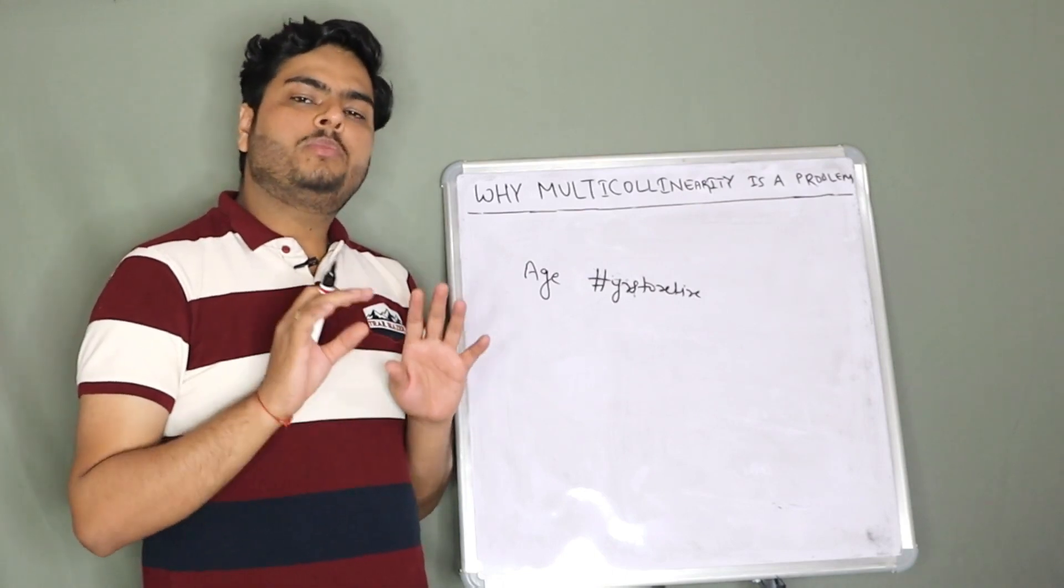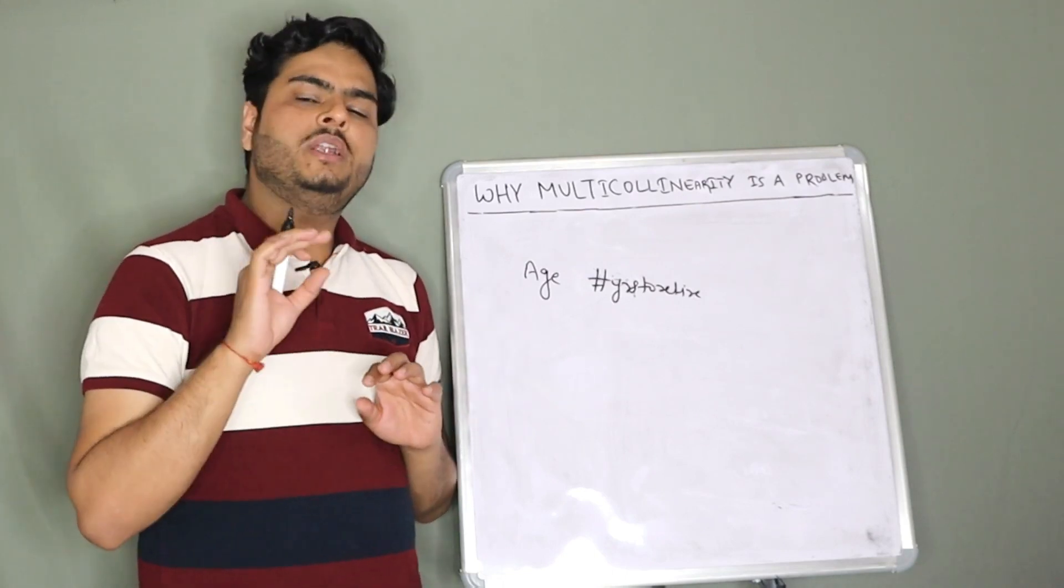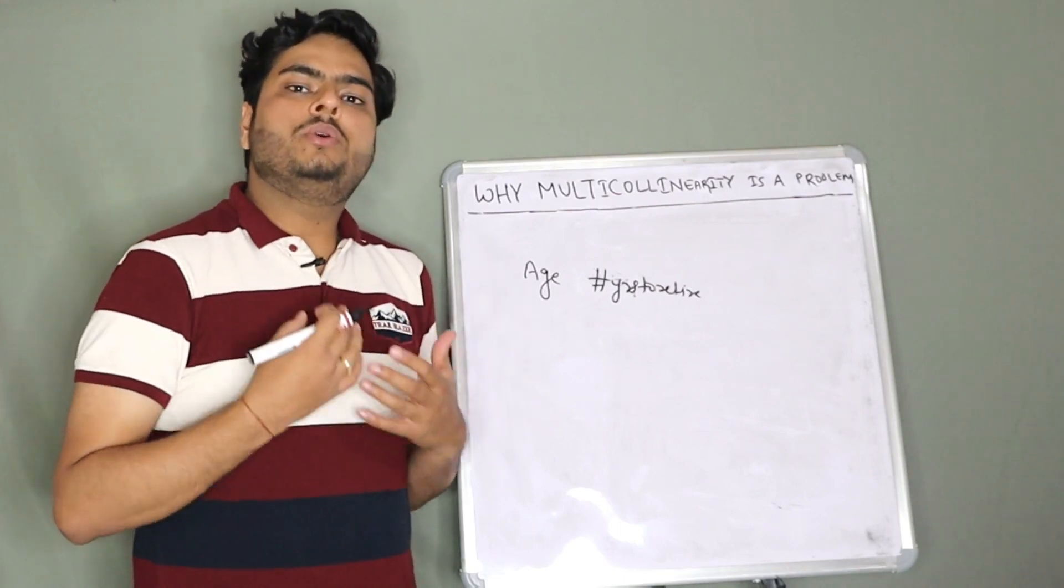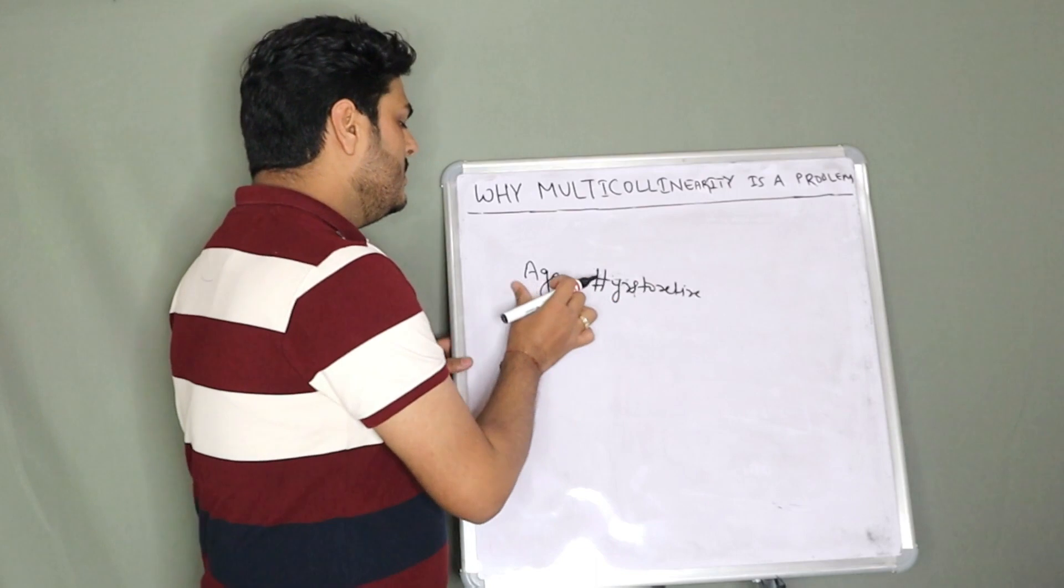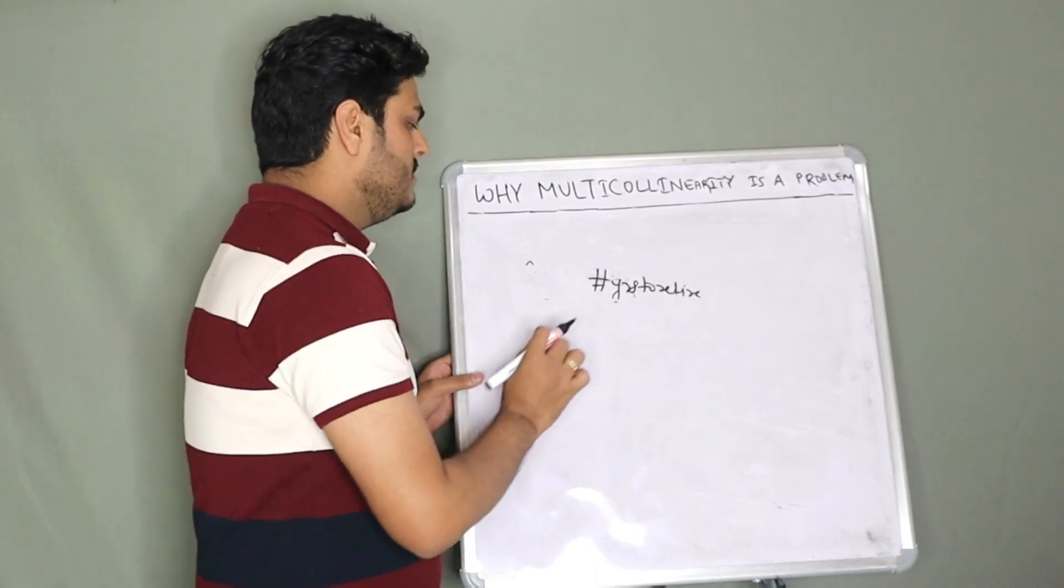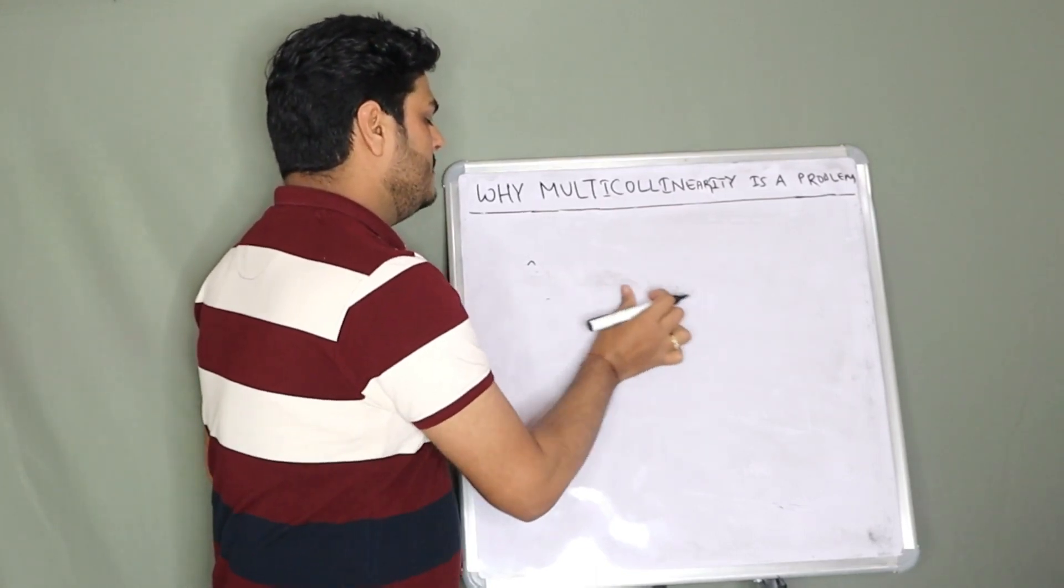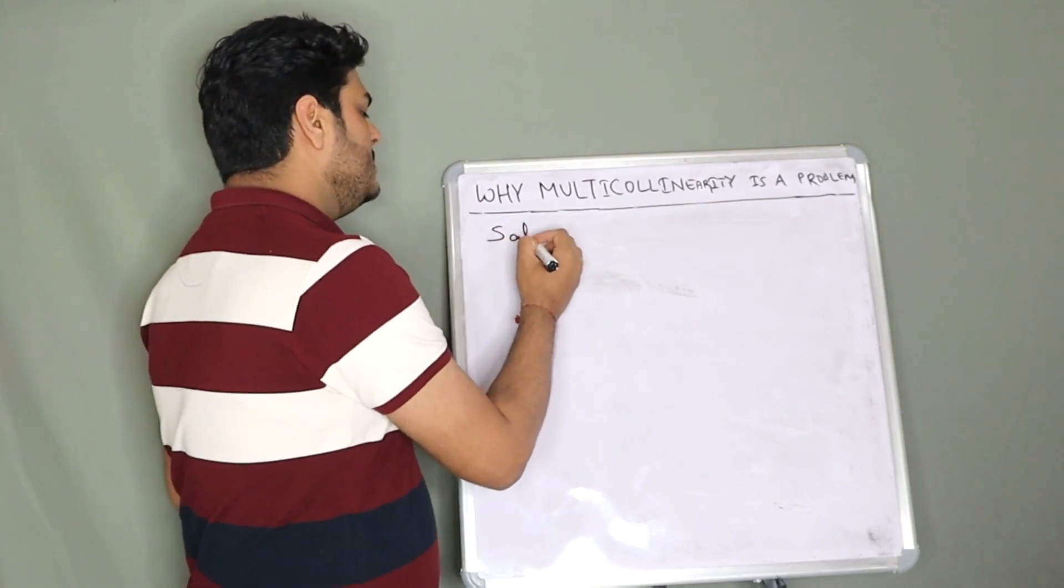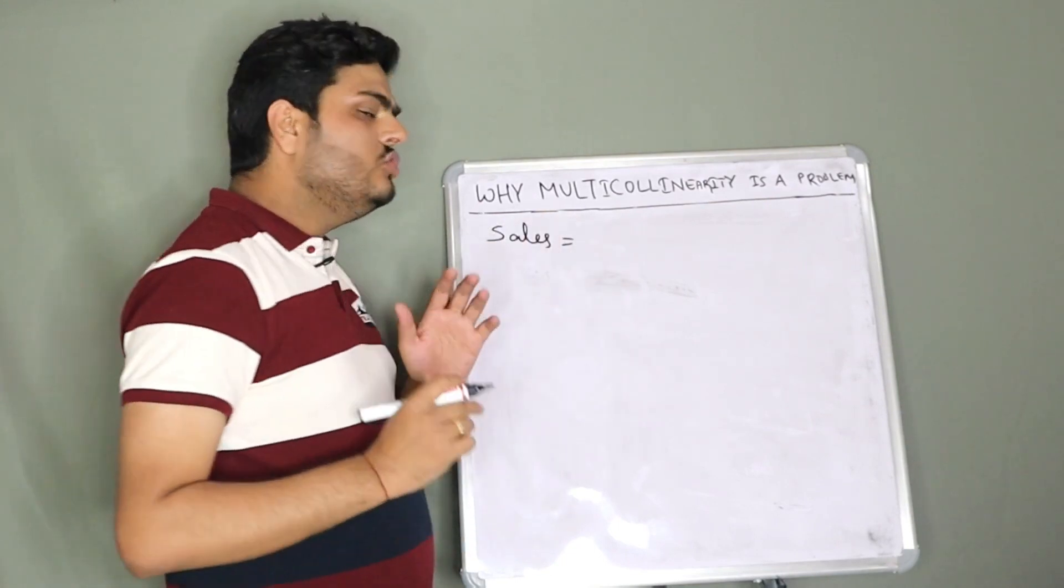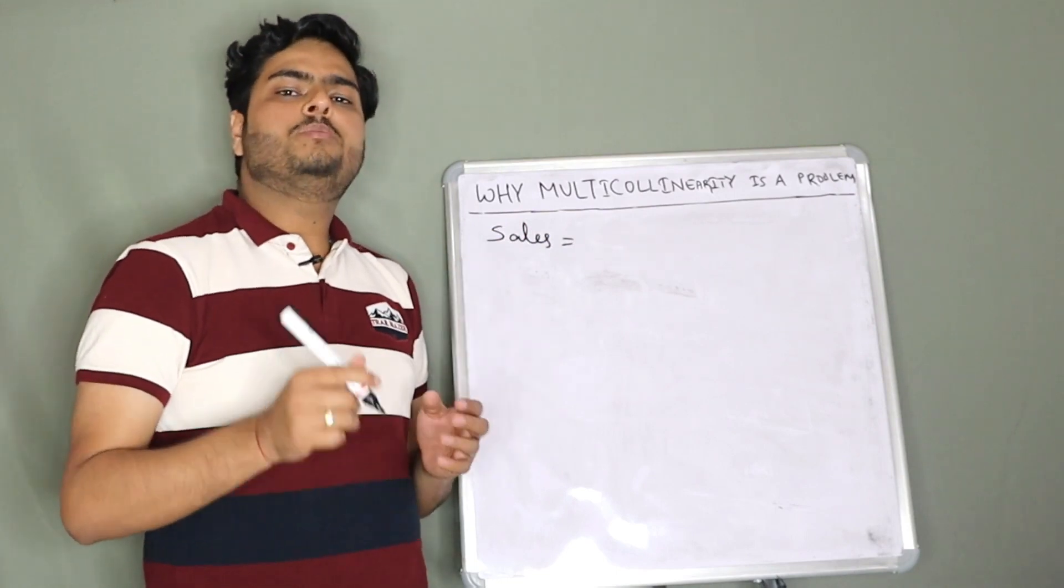Why multicollinearity is a problem? Before that, we will understand why there is multicollinearity in the data. Let me write a simple equation. Let me write: sales is equal to—I'm assuming you sell this marker.